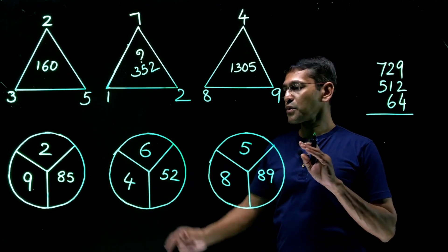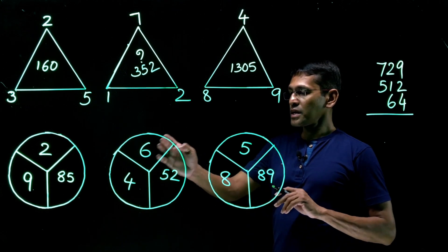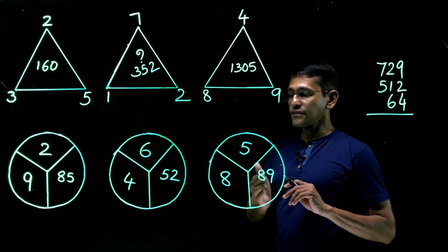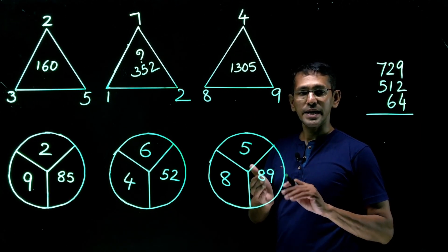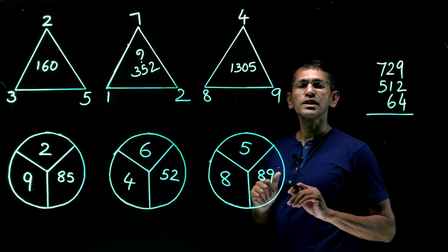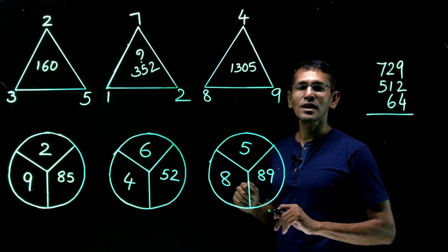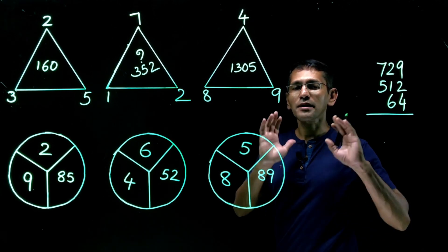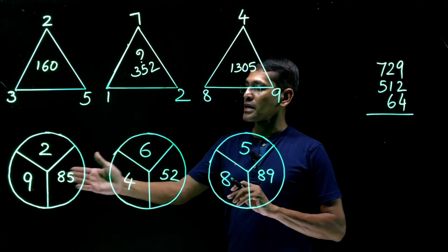Right here on the board. You see this? 2, 9 and 85. Second one? 6, 4 and 52. And this is 8, 5 and 89. So I have given the answer as well, 89. But you need to find out what exactly the pattern here. That is another way of looking at these questions. Practice, practice, practice make you perfect.